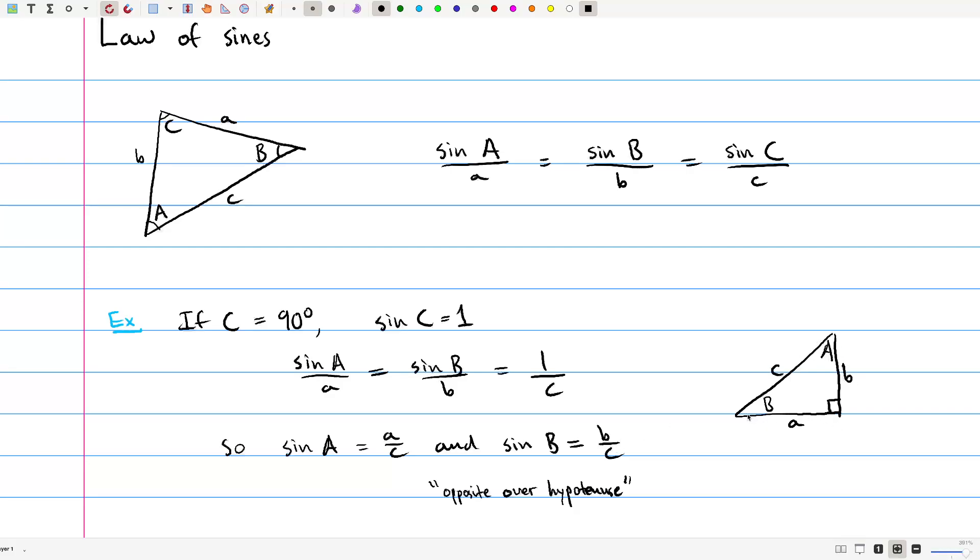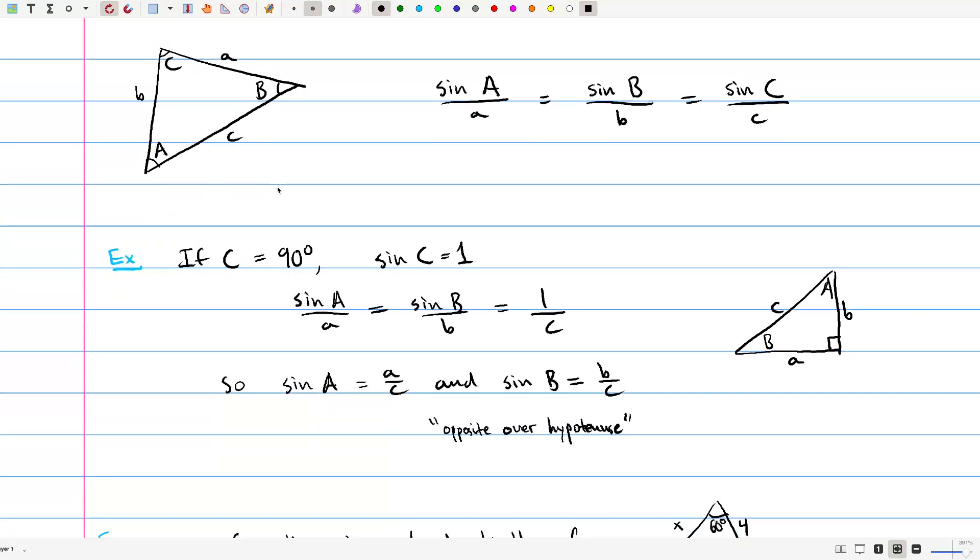So one thing that we can see is that, for example, sine of big A is little a over c. It's the opposite side length divided by the hypotenuse. And sine of big B is little b over c. It's the opposite over the hypotenuse, as expected if you know your right angle trigonometry. But the general law of sines does not need it to be a right angle.